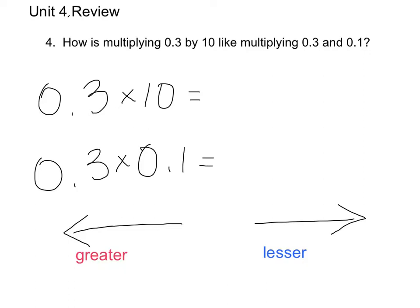Item 4 is the first one I wanted to talk about. This is one of those thinker questions. It's asking us how multiplying 0.3 times 10 is similar to multiplying 0.3 times 0.1, and then maybe also how is it different. I thought, well sometimes the best way to think is to do and then go back and think about what you've done.